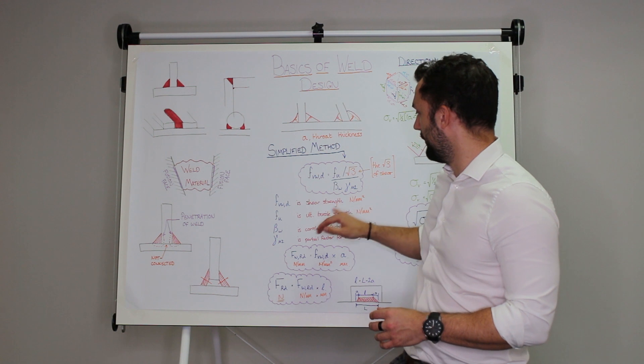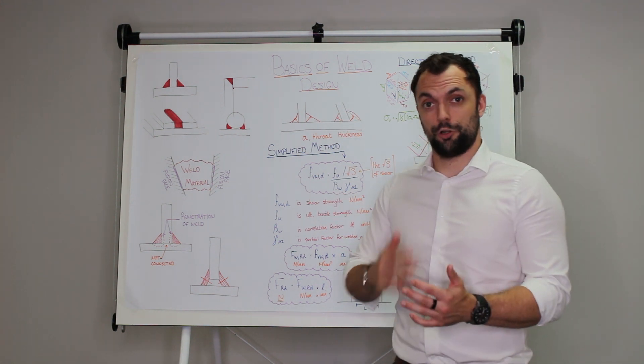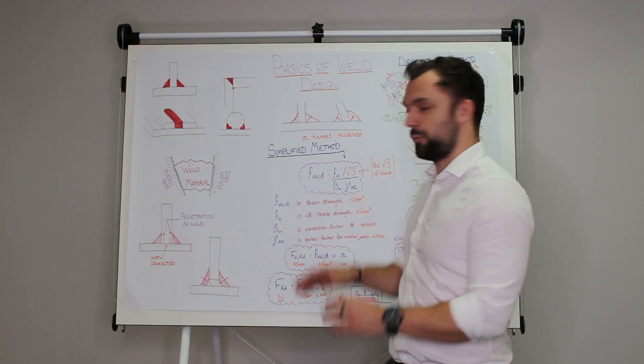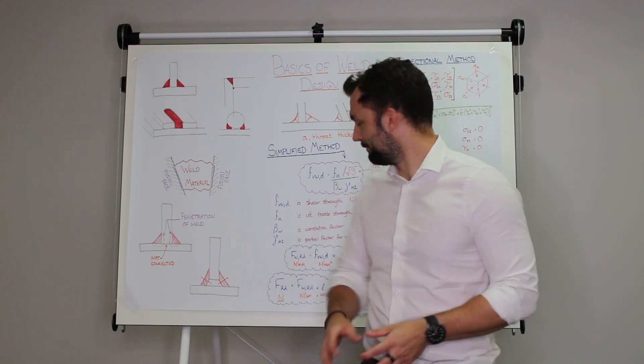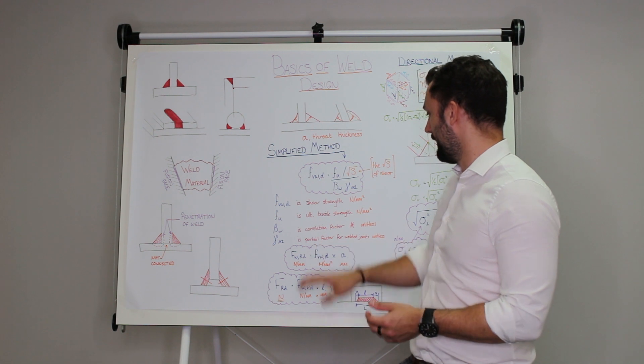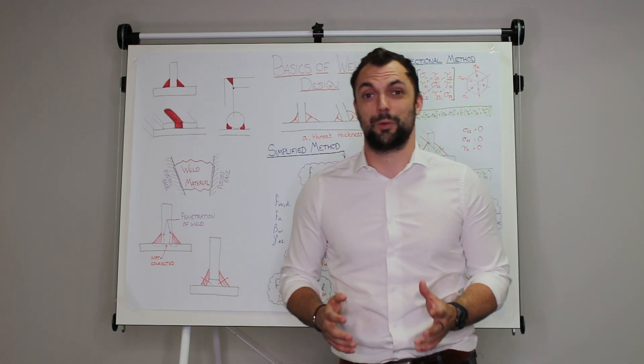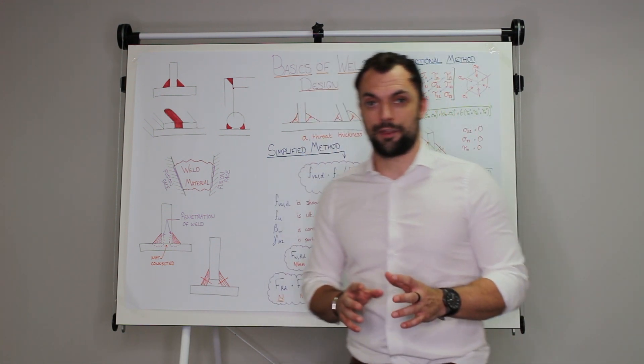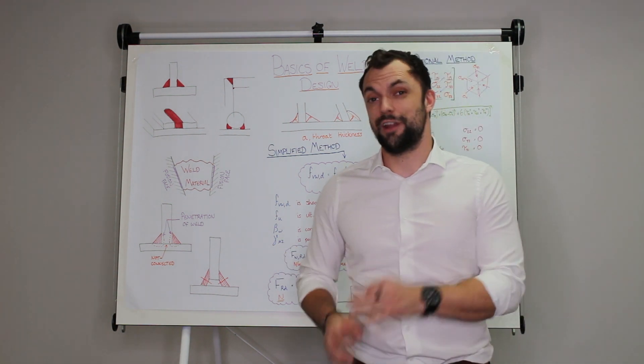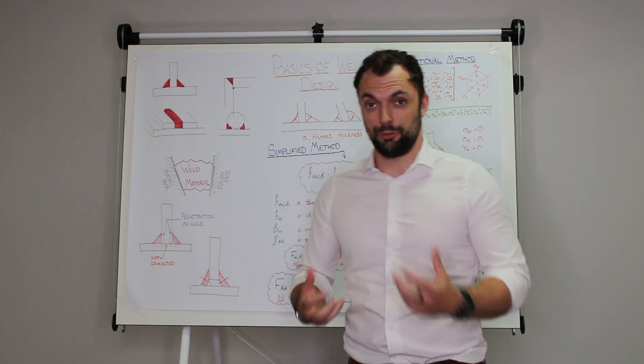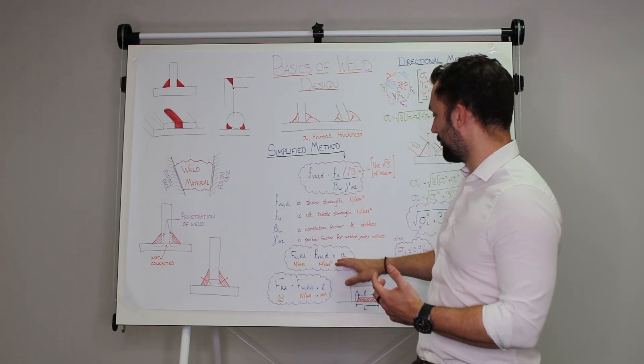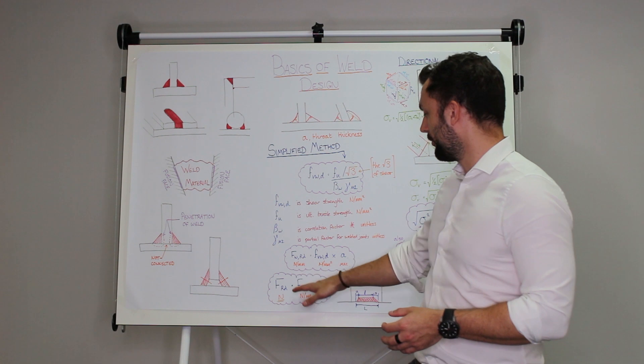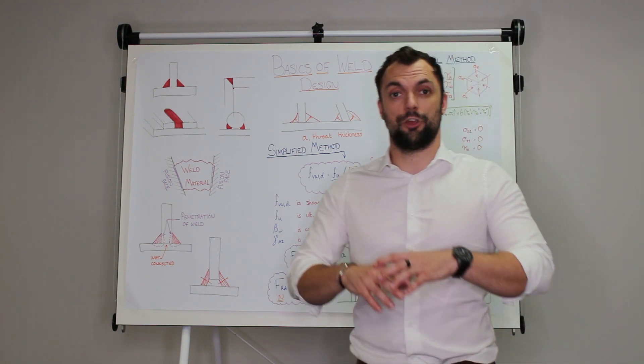So as you increase the strength of the parent material this beta w factor becomes closer and closer to 1.0, so when you're using S460 for example that beta w is 1.0 so it doesn't give you any advantage. The gamma m2 that's the last piece of the puzzle, that's a partial factor you'll be familiar with those if you're familiar with Eurocodes at all and for a welded joint that's 1.25. So that's given us the shear strength in newtons per square millimeter but what we really want is the overall strength of that weld in kilonewtons or newtons. So we multiply that shear strength by the throat thickness and that gives us the strength per length, the strength per millimeter, and then we multiply that by the overall length and that gives us the total strength of that weld.